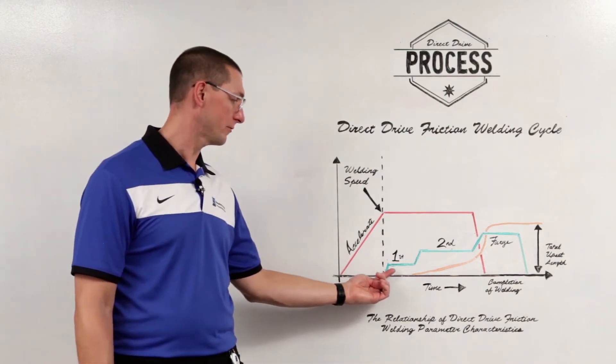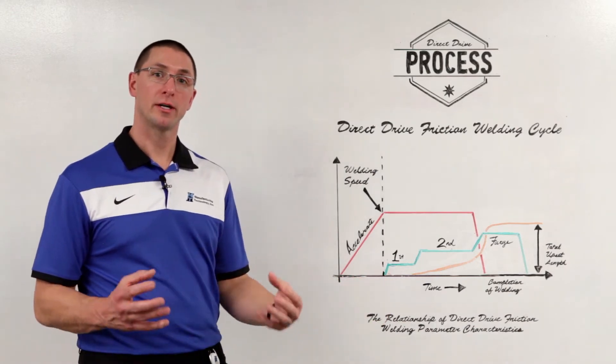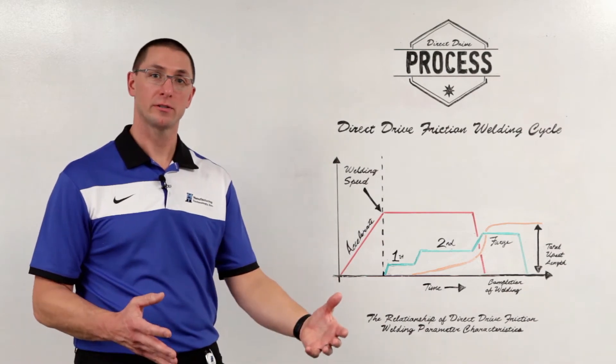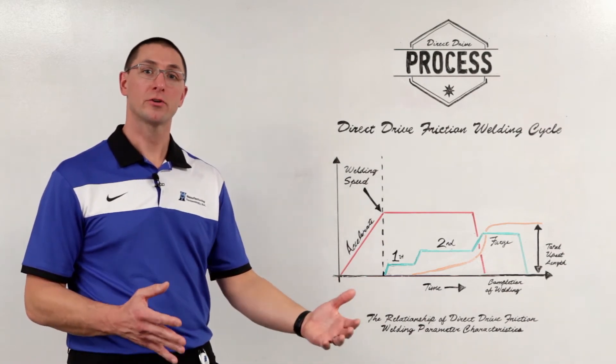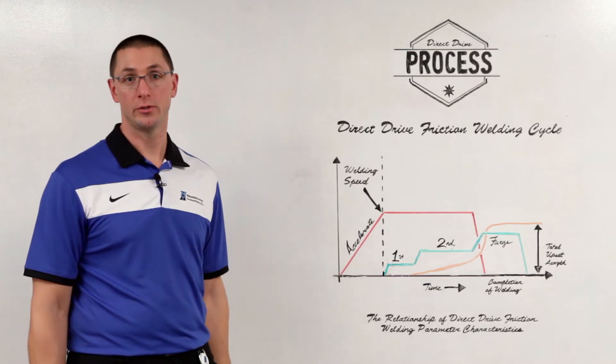We bring on a low friction force to begin with in order to generate a little bit of heat at the weld interface. This decreases the coefficient of friction and ensures that we don't stall the motor due to excessive torque.